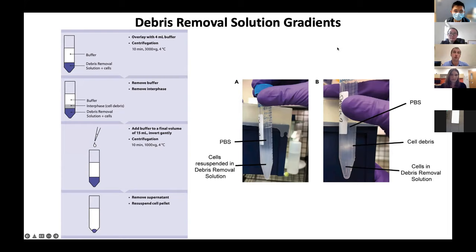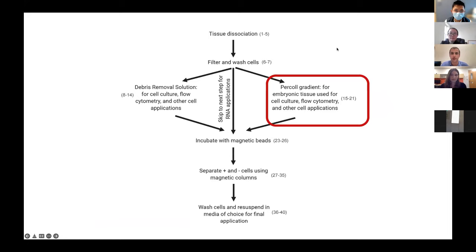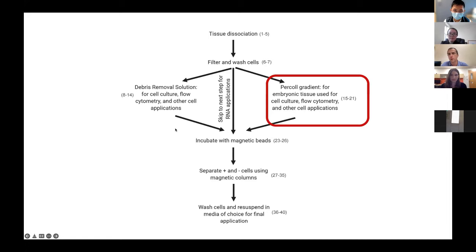While the debris removal solution is my preferred method due to ease and speed, another method we often use is enriching for mononuclear cells using a Percoll density gradient. One tissue type where this method works far better is embryonic tissue such as an embryonic brain. Across multiple labs, we've seen that using the debris removal solution on embryonic brains yields essentially nothing, so we have to use the Percoll gradient — this more classical density centrifugation method.